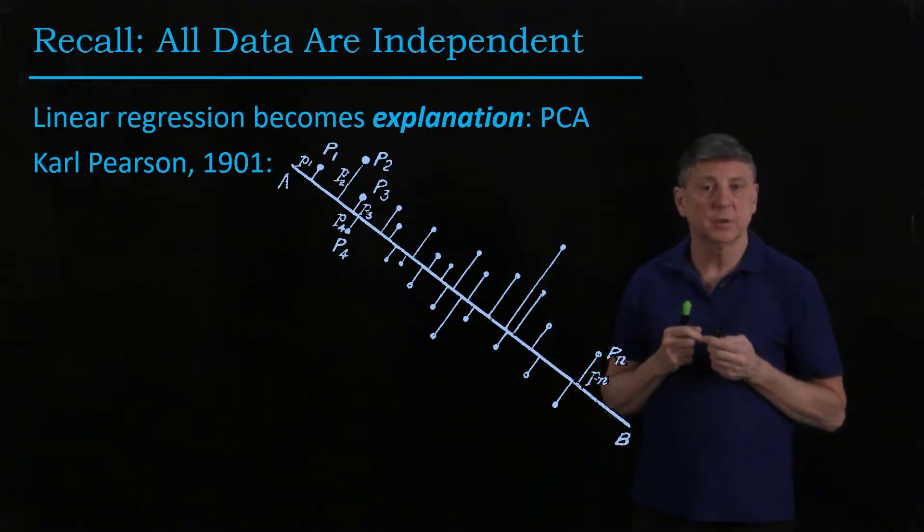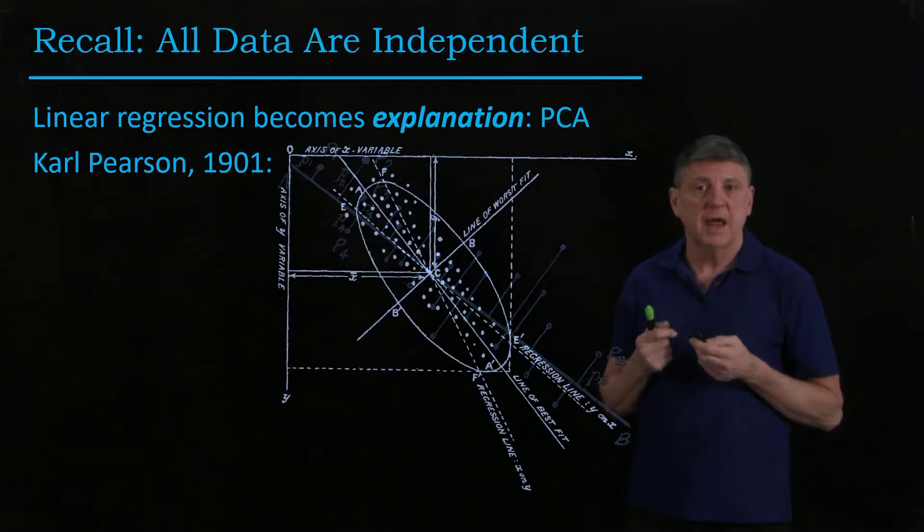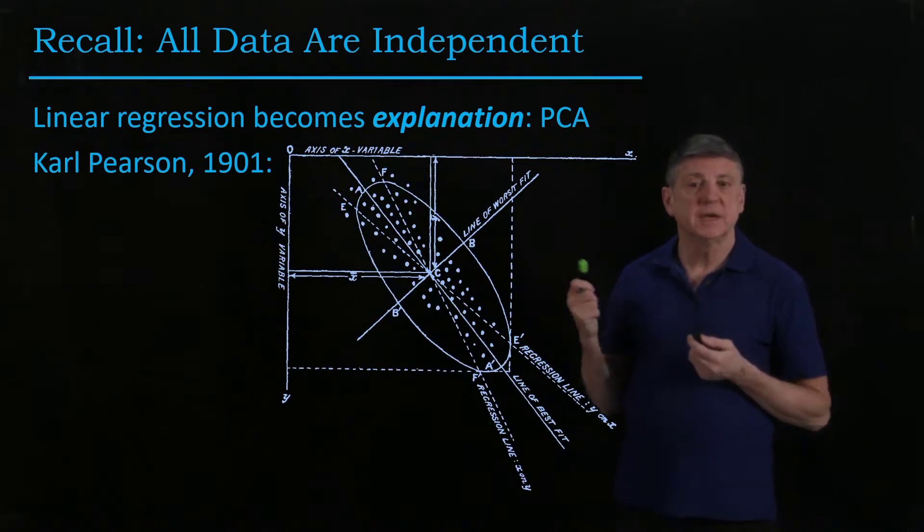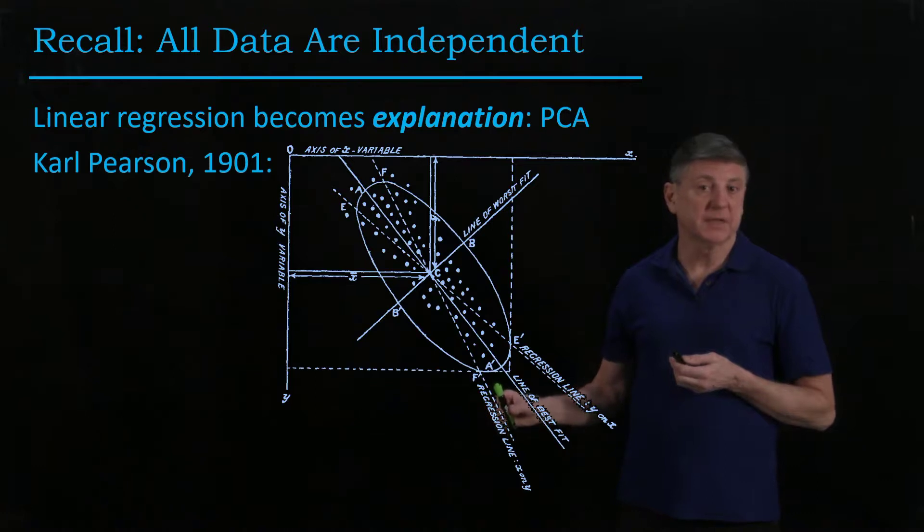This is one of the illustrations, one of the figures from his 1901 paper, and he's expressing exactly what we just went through. And he went further. He noted that if we regress one variable against another, or we regress the other variable against the first,